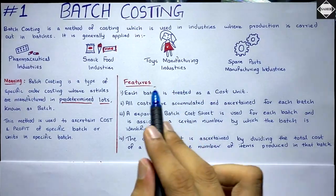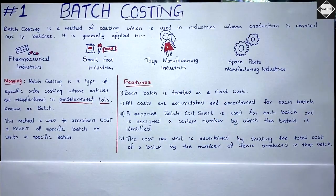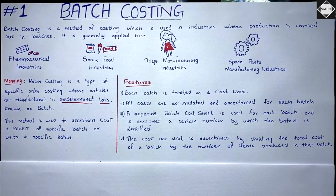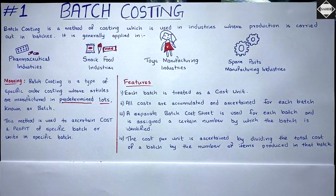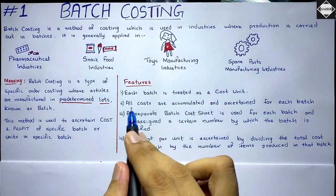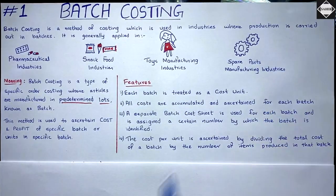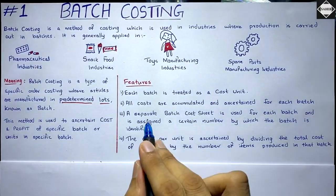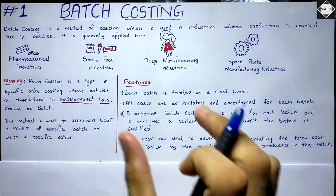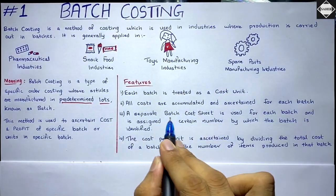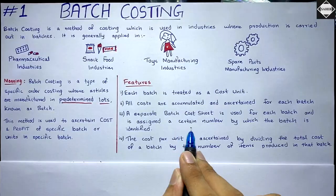Each batch is treated as a cost unit. In job costing, a single job was the cost unit; here the entire batch is the cost unit. All costs and expenses incurred are accumulated per batch — all costs are ascertained for each batch separately. A separate batch cost sheet is prepared for each batch, just like a job cost sheet in job costing.